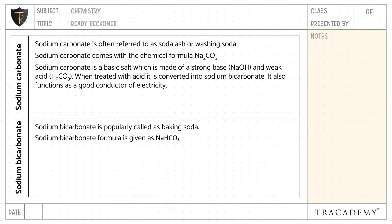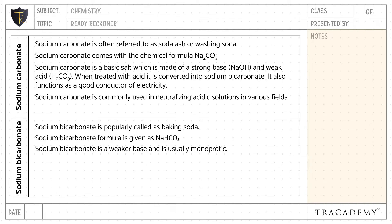When treated with acid, sodium carbonate is converted into sodium bicarbonate. It also functions as a good conductor of electricity. Sodium bicarbonate is a weaker base and is usually monoprotic. Sodium carbonate is commonly used in neutralizing acidic solutions in various fields.